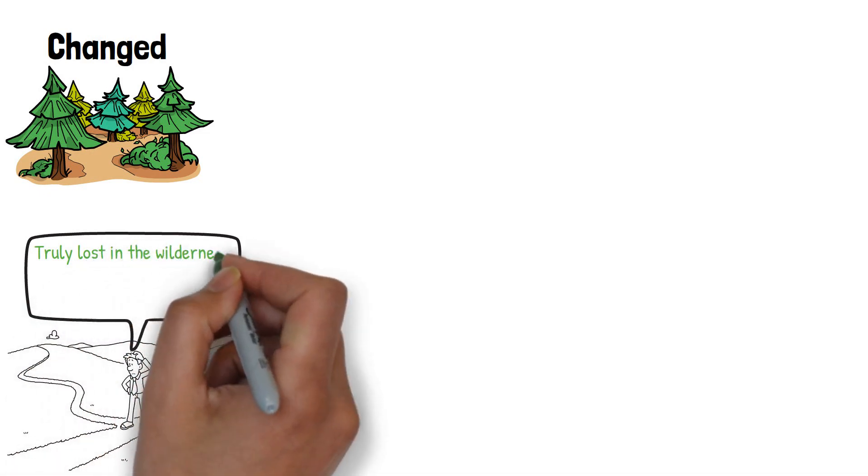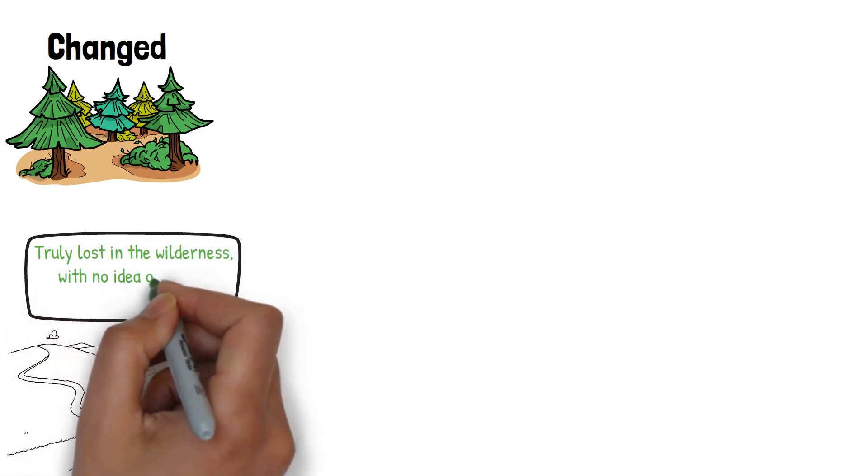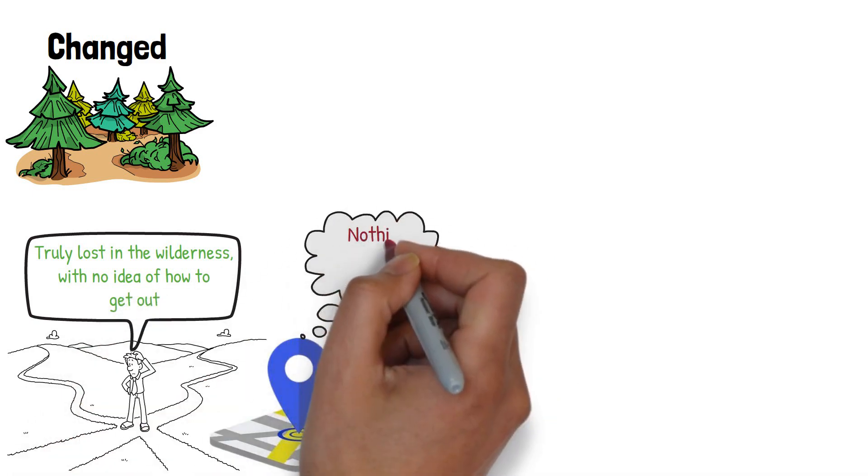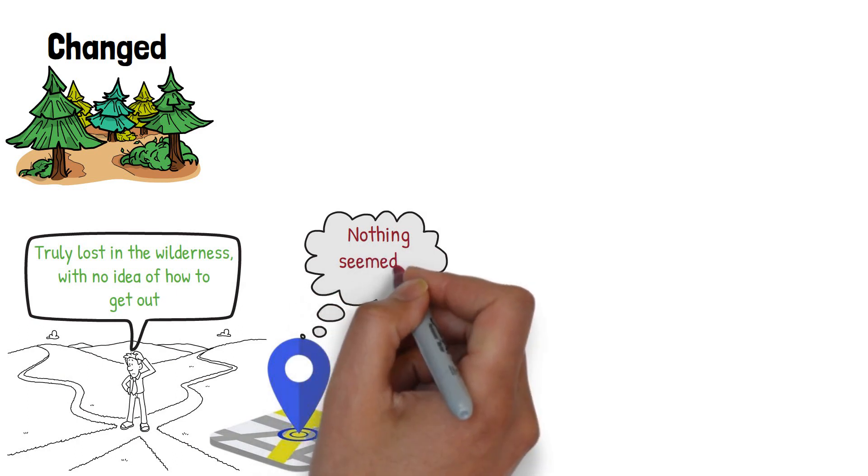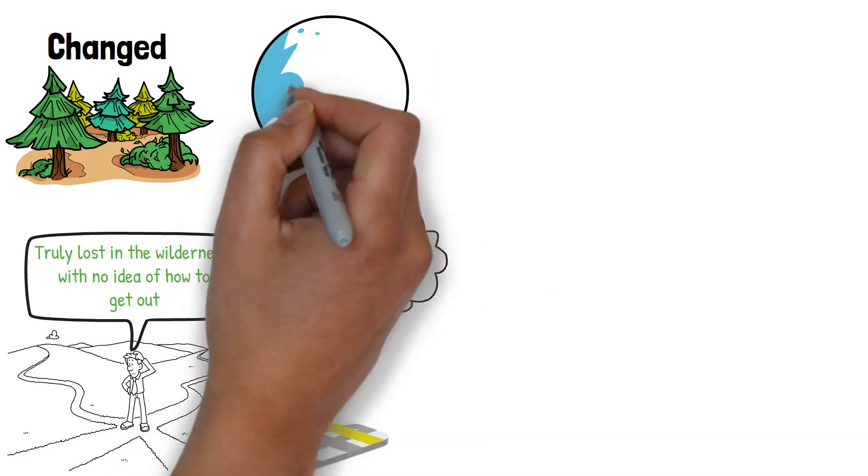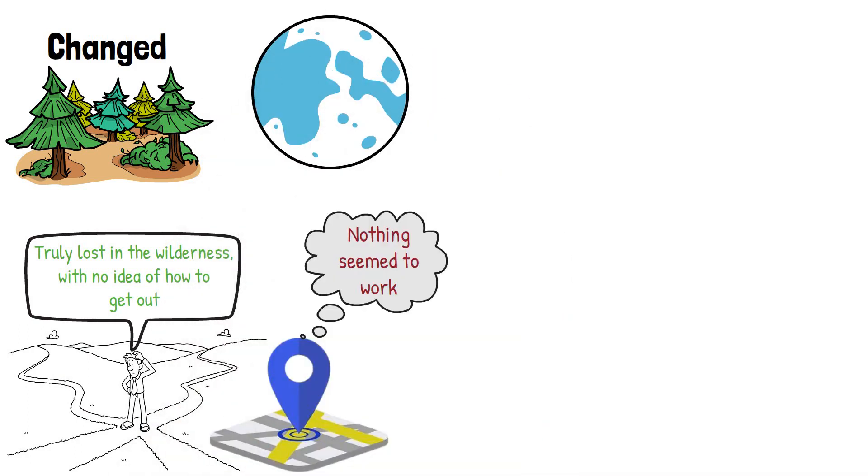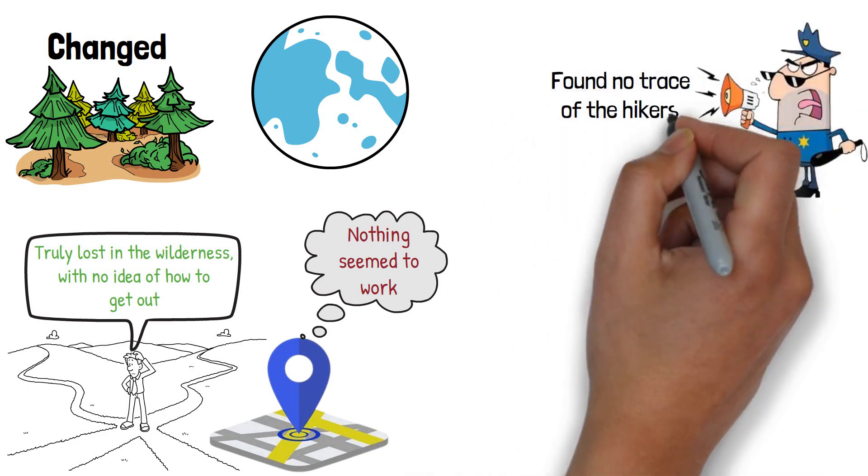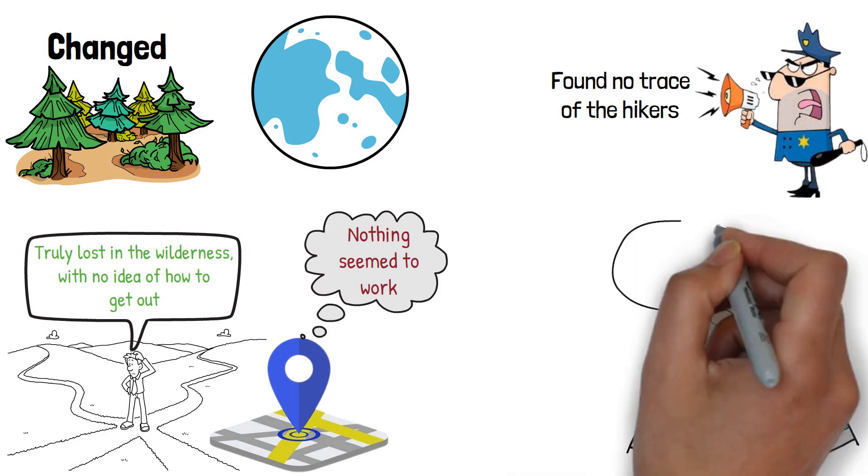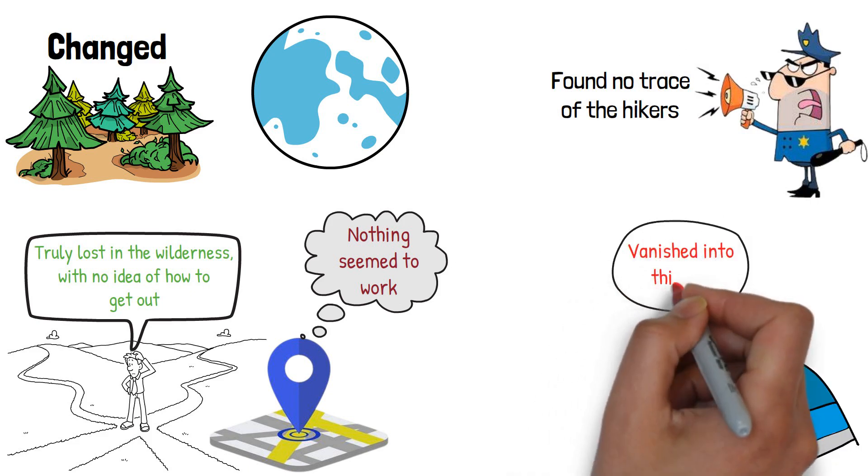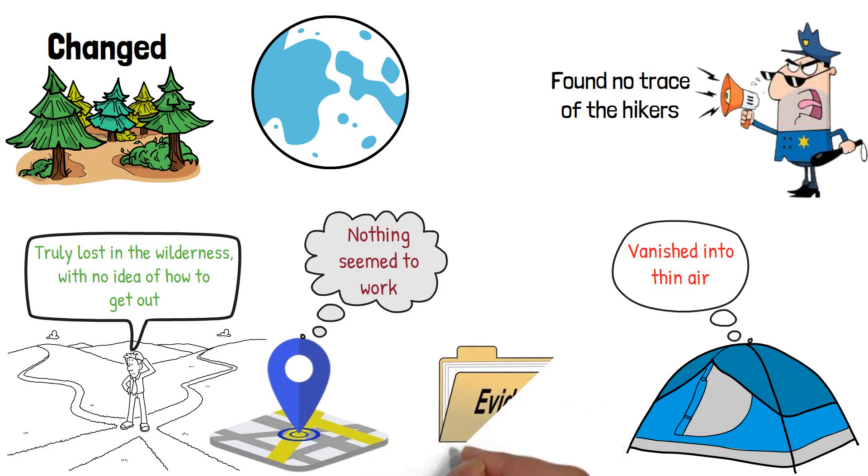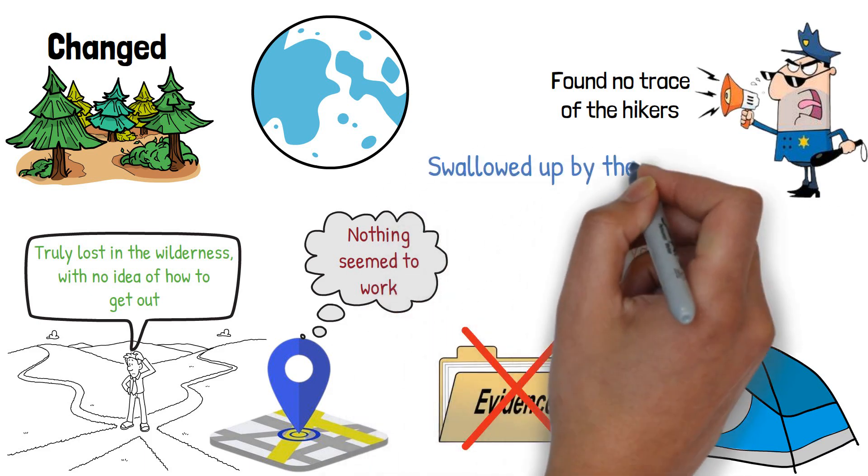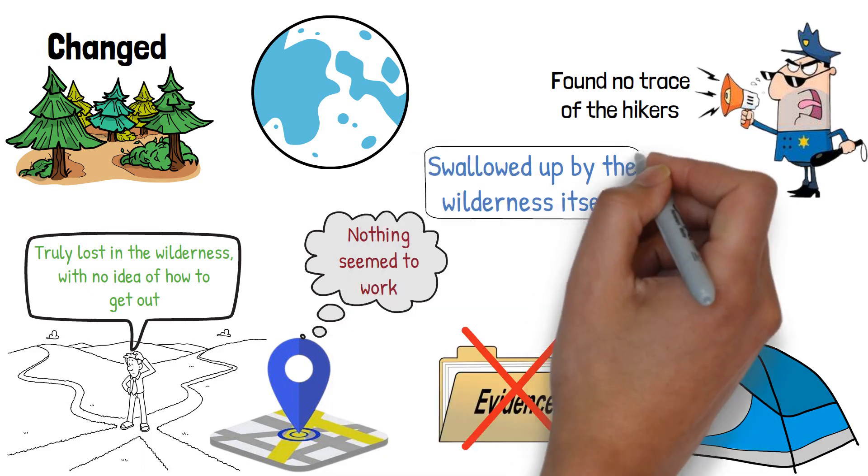Panic set in as they realized that they were truly lost in the wilderness with no idea of how to get out. They tried to use their GPS and other equipment to find their way, but nothing seemed to work. It was as if they were in a different world altogether. As the days passed, the search team scoured the area but found no trace of the hikers. Their empty tents were found, but it was as if they had vanished into thin air. The forest was searched thoroughly, and yet no evidence of their presence was found. It was as if they had been swallowed up by the wilderness itself.